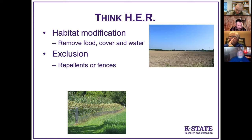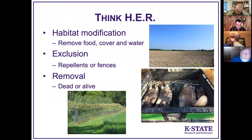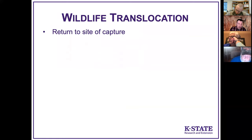E stands for exclusion — we're using a fence, like this example with a low chicken wire fence with barbed wire on top to keep raccoons out, and a taller electric wire to keep deer from jumping over — a good way to exclude critters from a corn patch. R stands for removal, which can be dead or alive. In this example, beavers were flooding an area and killing high-value trees, so those beavers had to be removed lethally.